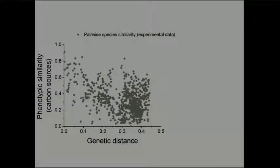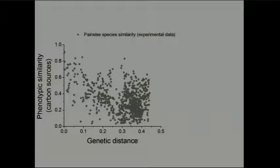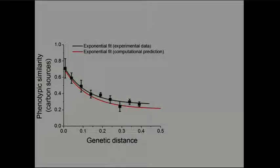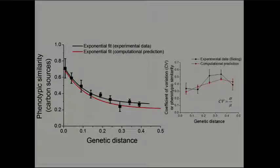The experimental data shows genetic distance versus phenotypic profile similarity with a spread of points showing more conservation at close distances. When you calculate the average behavior across all pairwise comparisons for the 40 species, it's quite similar to what we observed in our model predictions. The two curves fall very closely together. Remarkably, not only do we capture the average behavior, but the variability — measured using coefficient of variation as a function of genetic distance — also overlaps well, so predictions and experimental data are consistent in both mean and variance.